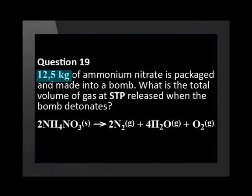12.5 kilograms of ammonium nitrate is packaged and made into a bomb. What is the total volume of gas at STP released when the bomb detonates? 2NH4NO2(s) → 2N2(g) + 4H2O(g) + O2(g).